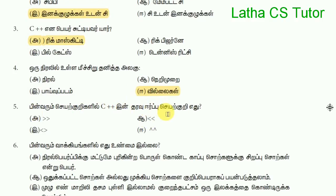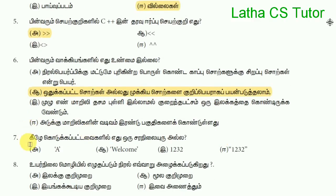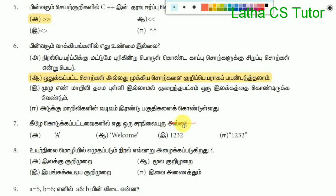Pins are the same as C++. The extraction symbol is option A. C++ is the same as C++, so the extraction symbol is option A. This is the string literal.